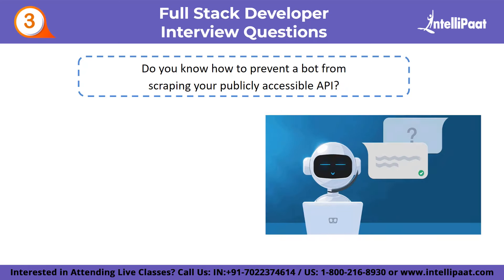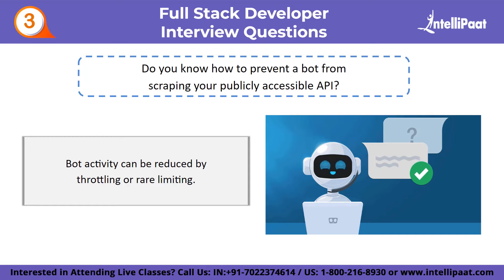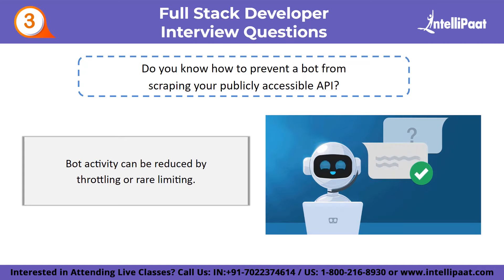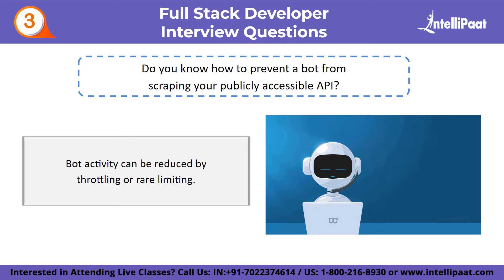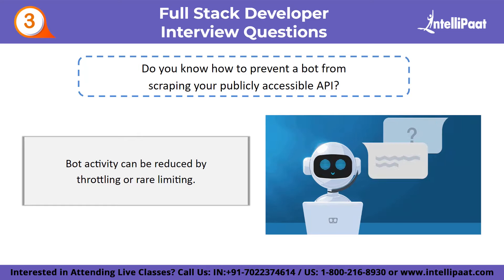Third advanced question: do you know how to prevent a bot from scraping your publicly accessible API? It is technically impossible to completely prevent data scraping as long as the data within the API is accessible to the public. However, bot activity can be reduced by throttling or rate limiting. Rate limiting can prevent a specific device from making an unlimited number of requests within a specified timeframe. A 429 'Too Many Requests' HTTP error is thrown if too many requests are made beyond the defined limit.